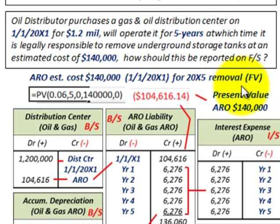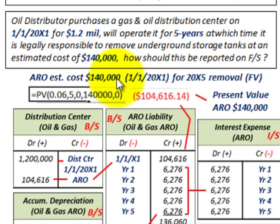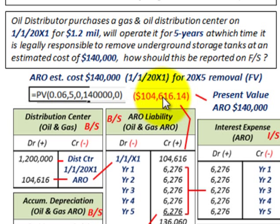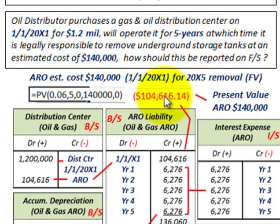The first thing we have to do is deal with this ARO estimated cost. We've got $140,000 based on the purchase date of 1/1/20X1 — that's our estimate to clean it up in 20X5, five years later. Our fair value is going to be the present value of this $140,000. We're going to discount it back using a 6% interest rate over five years. The present value — what it would cost in today's dollars — is $104,616. That's the fair value or present value of this ARO.